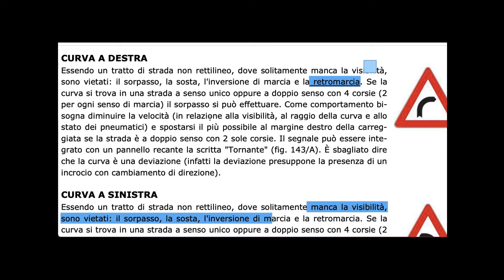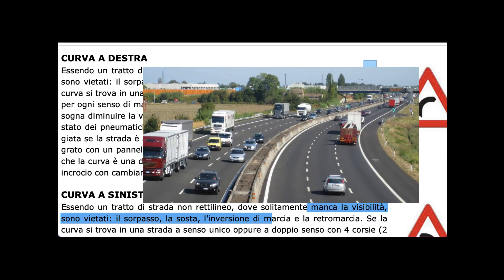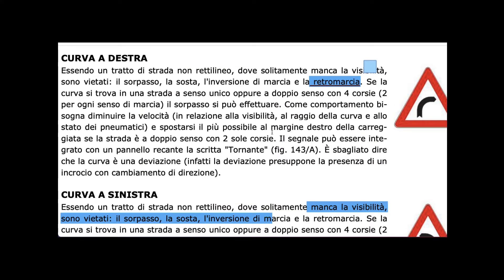However, if we have a road with four lanes — 'quattro corsie, due per ogni senso di marcia' — meaning two lanes per direction, where vehicles in opposite directions don't really meet each other, then overtaking is permissible in that case.